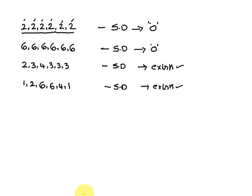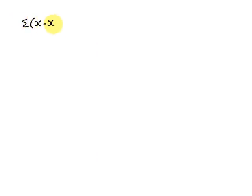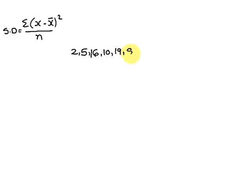The standard deviation formula is σ = sqrt(Σ(x − x̄)² / n). We now apply this to the example: 2, 5, 16, 10, 19, 8. The mean x̄ is 10, and n equals 6.